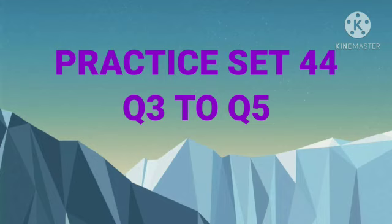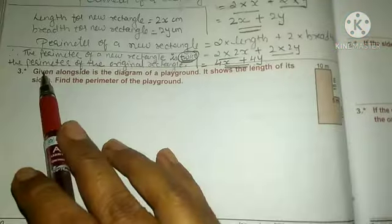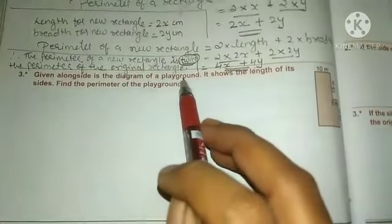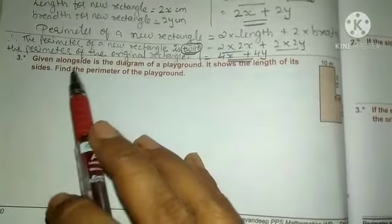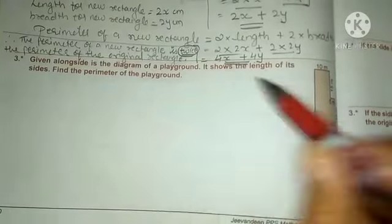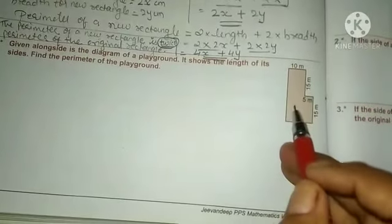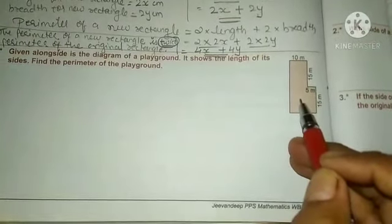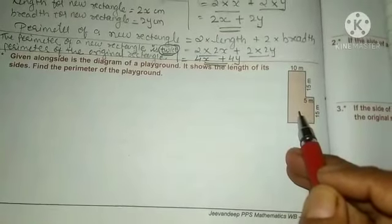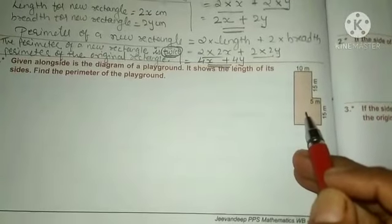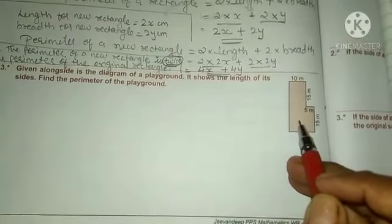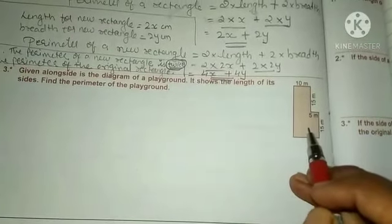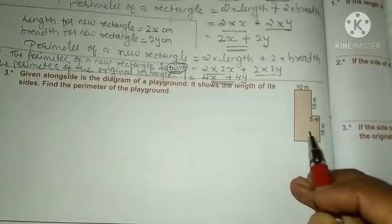Now let's see Practice Set 44, Question 3 to 5. Question 3: Given alongside is the diagram of a playground showing the lengths of its sides. Find the perimeter of the playground. The figure of the playground is given, and you have to find out its perimeter by adding all the sides.